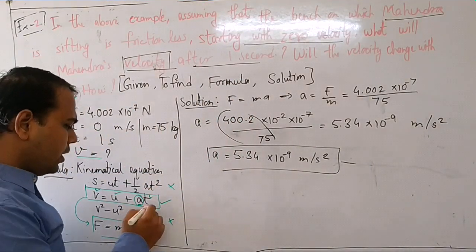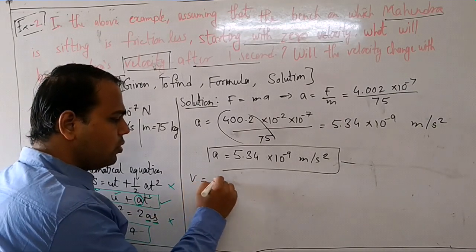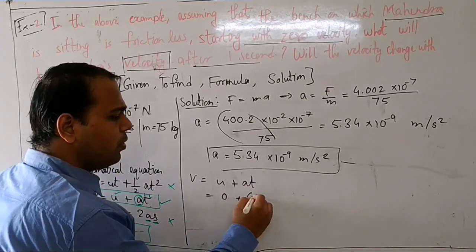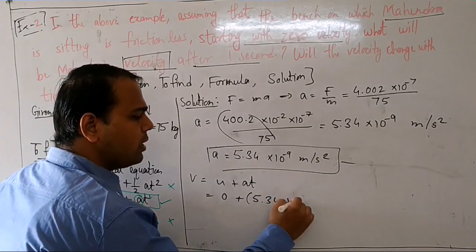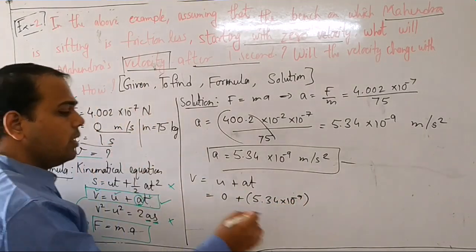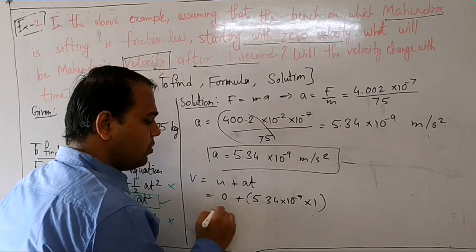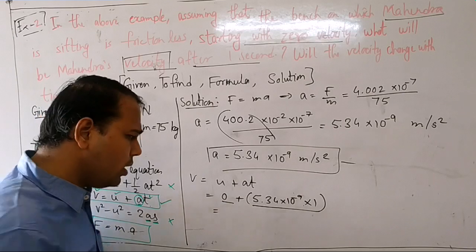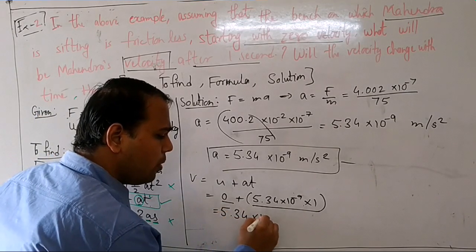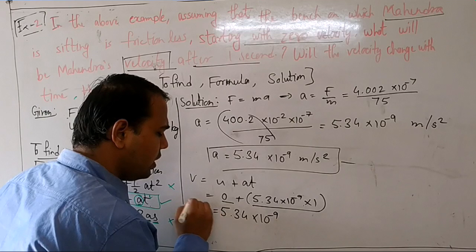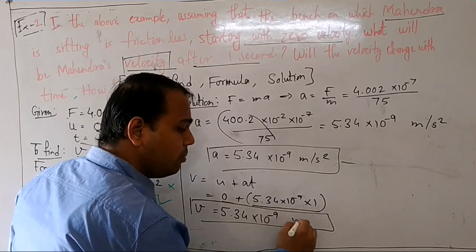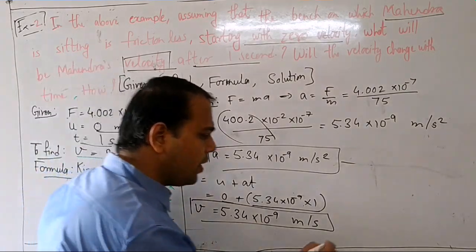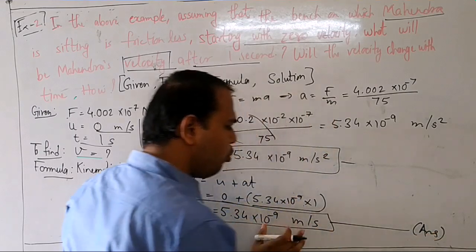Using v = u + at, with u = 0 and a = 5.34 × 10⁻⁹, and substituting the time value, the final velocity comes out to approximately 5.34 × 10⁻⁹ meter per second. This is our final answer. Box the answer clearly.